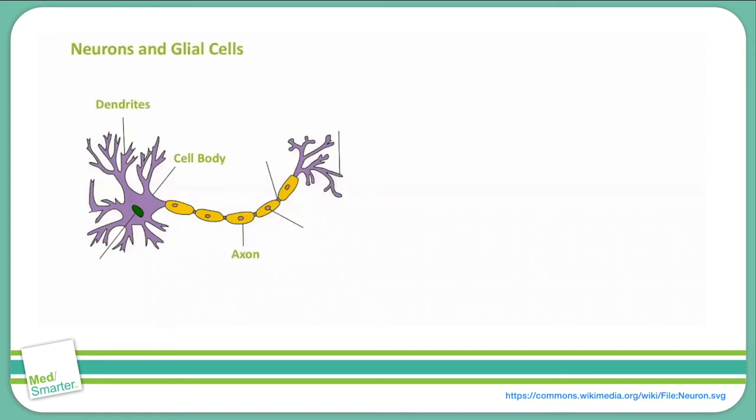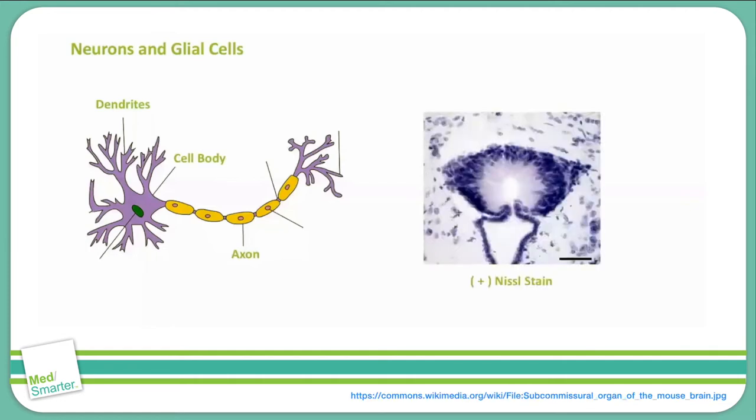I want to emphasize something about neurons that often gets tested on step one. That's the Nissel stain. This is a stain that pathologists can use on nervous tissue. The Nissel stain is specific to the cell bodies of axons because it binds to the nuclei and the rough endoplasmic reticulum of neurons, which are present only in the cell body. You should at least be familiar with the fact that the Nissel stain is specific for the cell bodies of neurons.